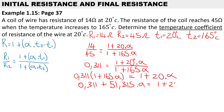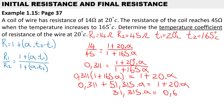Simplifying: we move 0.311 to the right side as minus, and move the 20 alpha term to the left as minus, giving 51.315 minus 20 equals 31.315 times the temperature coefficient on the left, and 1 minus 0.311 equals 0.689 on the right. Therefore the temperature coefficient is 0.689 divided by 31.315, which equals 0.022 degrees Celsius. Thank you.